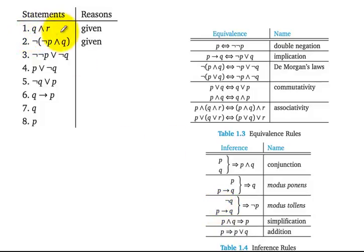On lines 1 and 2 we are given some information. On line 1 we are given Q and R. We are given that that is true. And on line 2 we are told that NOT P and Q is true. The question is, how can we obtain line 3 from the previous lines?